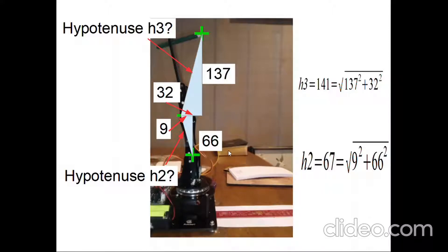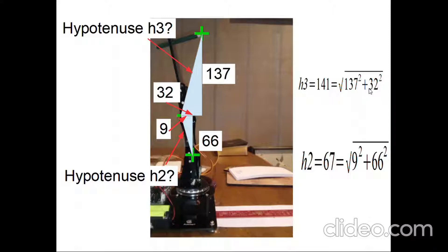I want to know the distance between the different points, and because I only have the x and y coordinates, I'll need to use the Pythagorean theorem to get the hypotenuse distances. For the lower triangle, it's 66mm in the y direction and 9mm in the x direction, so the square root of 9 squared plus 66 squared gives about 67mm. For the upper triangle, the x distance is 32mm and the y distance is 137mm — from subtracting coordinates — so the square root of 137 squared plus 32 squared gives about 141mm for hypotenuse H3.